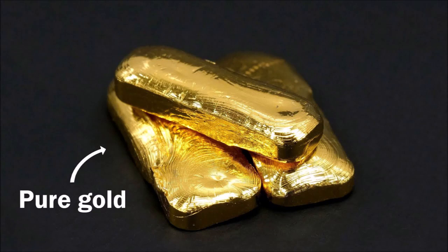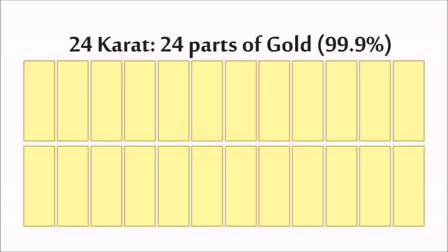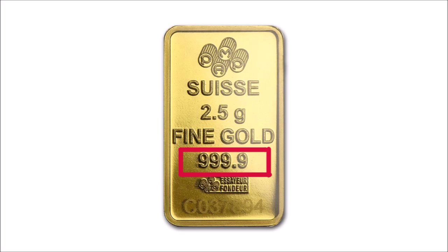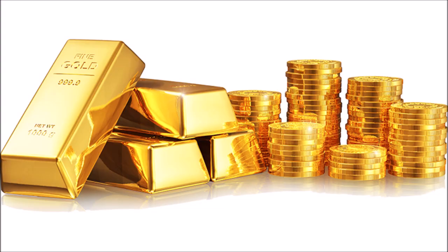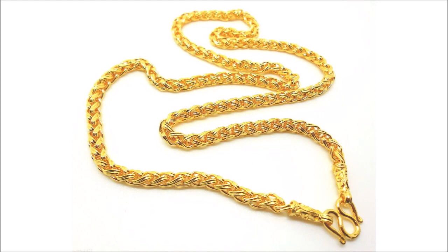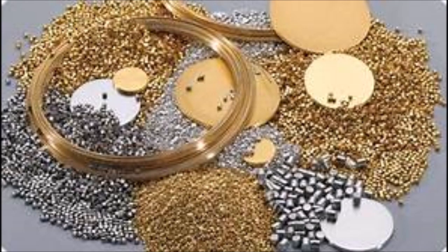First of all we need to understand what is 24 carat gold. 24 carat gold is the purest form of refined gold — it is divided into 24 parts and all the parts are gold. The purity of 24 carat gold is 99.9%, which is written as 999.9. Although pure gold is most preferred, it is not very favorable to make jewelry because gold is a very soft and malleable metal — it cannot hold its shape for a very long time, and even if you make jewelry out of pure 24 carat gold it has to be really strong and thick with limited design.